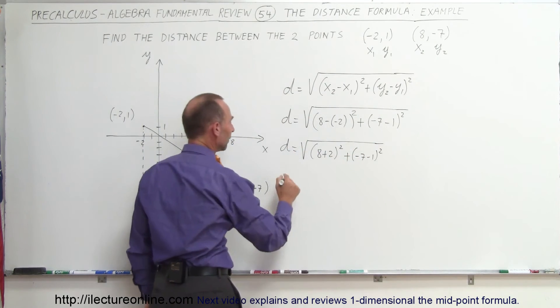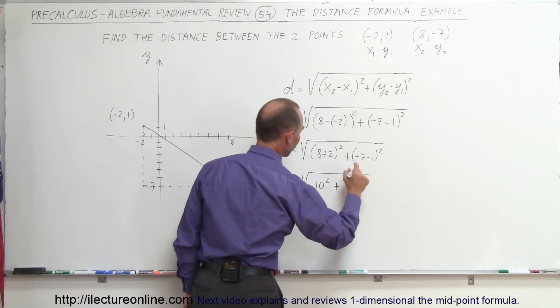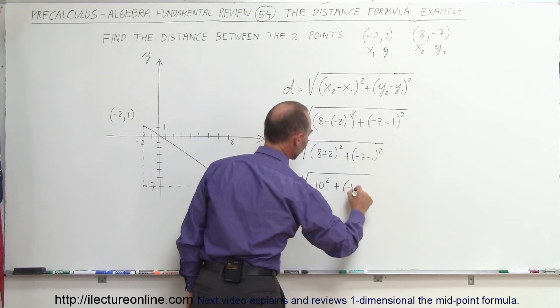Now we'll go ahead and combine those. So the distance is equal to the square root of 10 squared, plus minus 7 minus 1, that's a minus 8 squared. I use parentheses because there's a minus there.